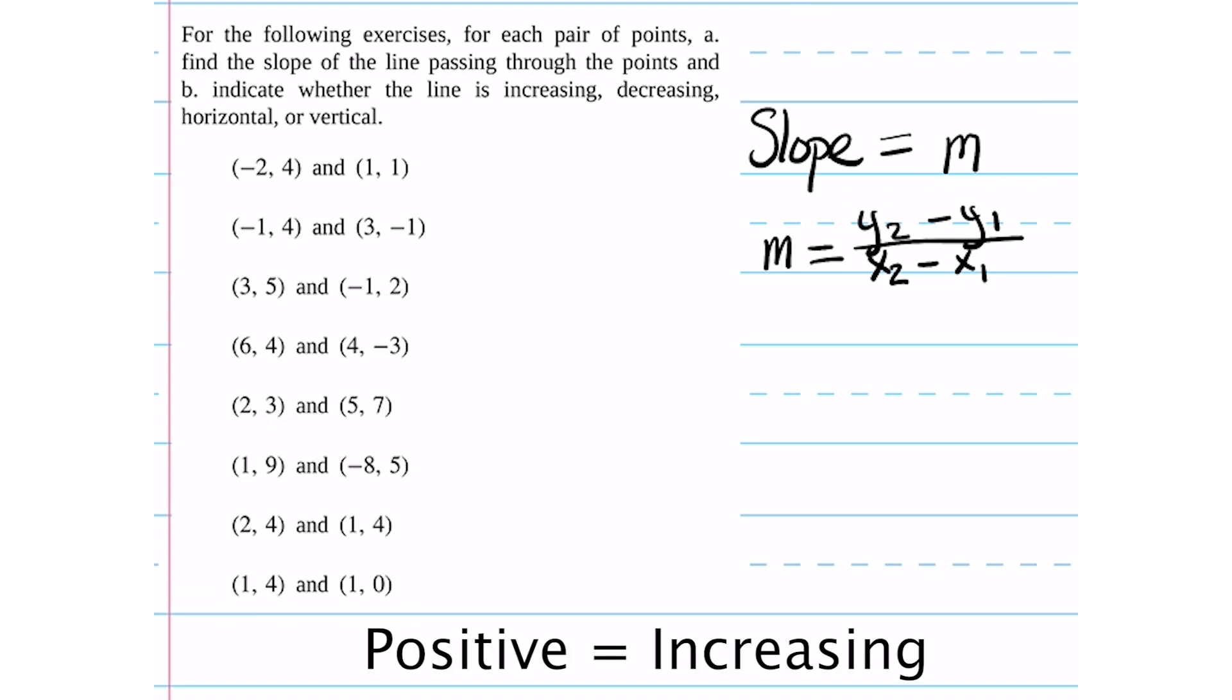If the slope is positive, then we know the line is increasing. If it is negative, we know it's decreasing. If the slope is zero, then the line is horizontal. And if it is undefined, then the line is vertical.